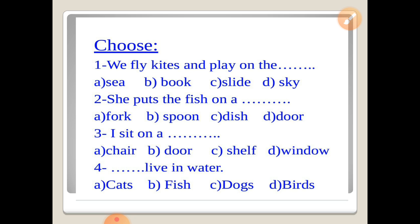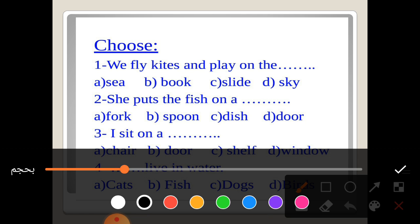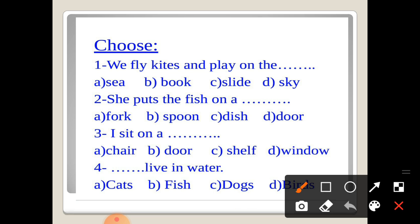Now we have a question choose. Number one: we fly kites and play on the... who's smart will say it with us. Okay. I heard many smart people. Number one: we fly kites and play on the: sea, book, slide, sky. Okay, yes, you're very good. Slide.